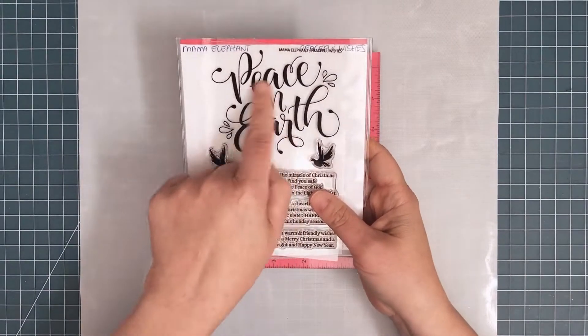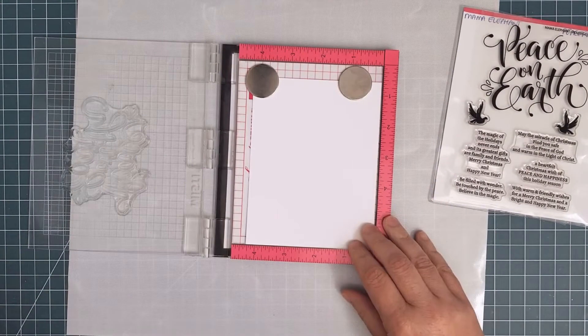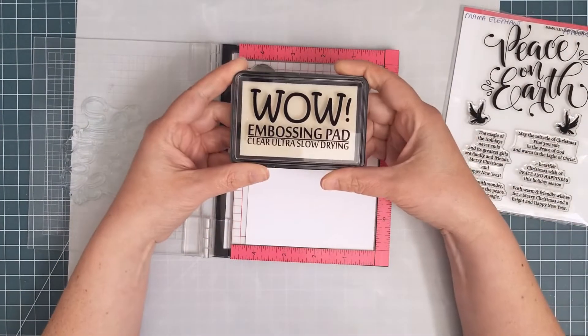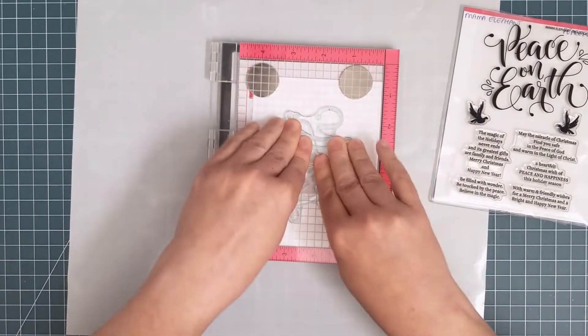First I stamped my sentiment. I used an anti-static pouch to make sure that the embossing powder would only stick where my stamping is. Then I stamped the Mama Elephant Sentiment with the Sticky Clear WOW Embossing Ink. This ink stays wet so you have time to pour embossing powder over it and heat it.